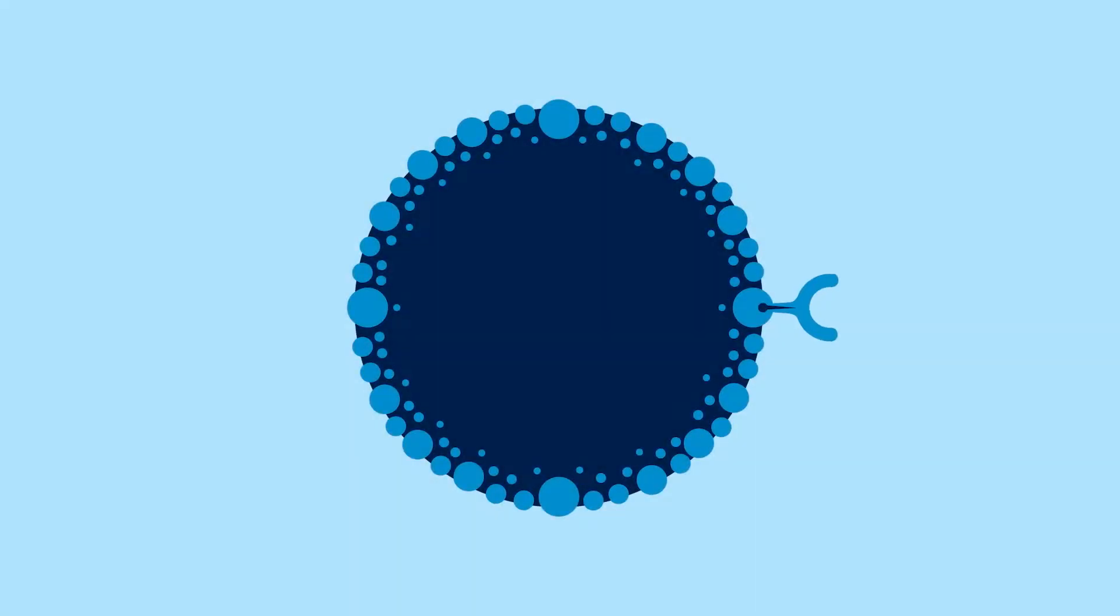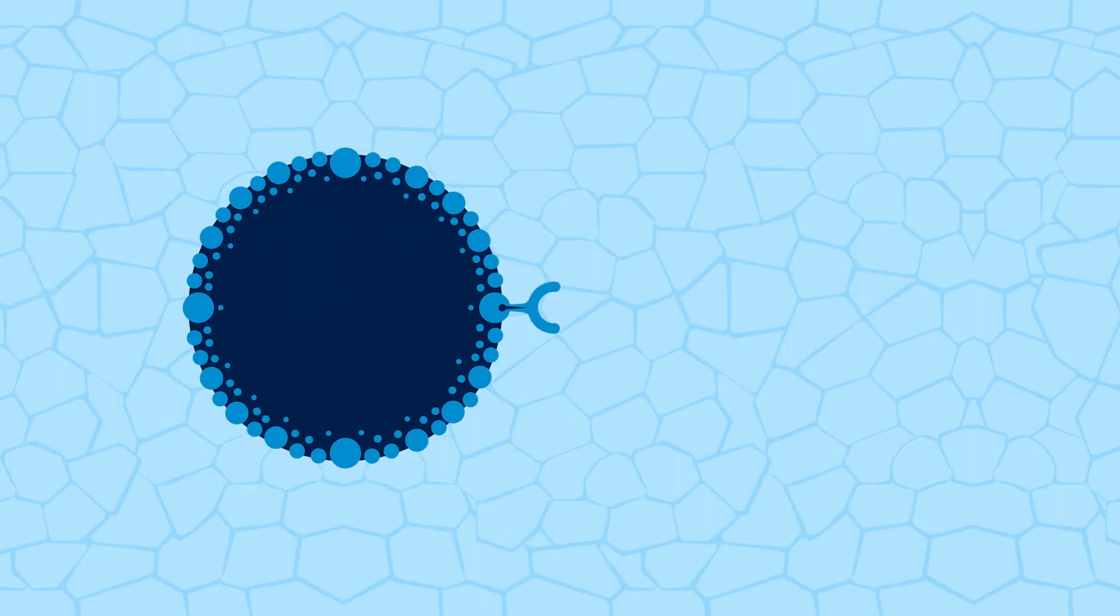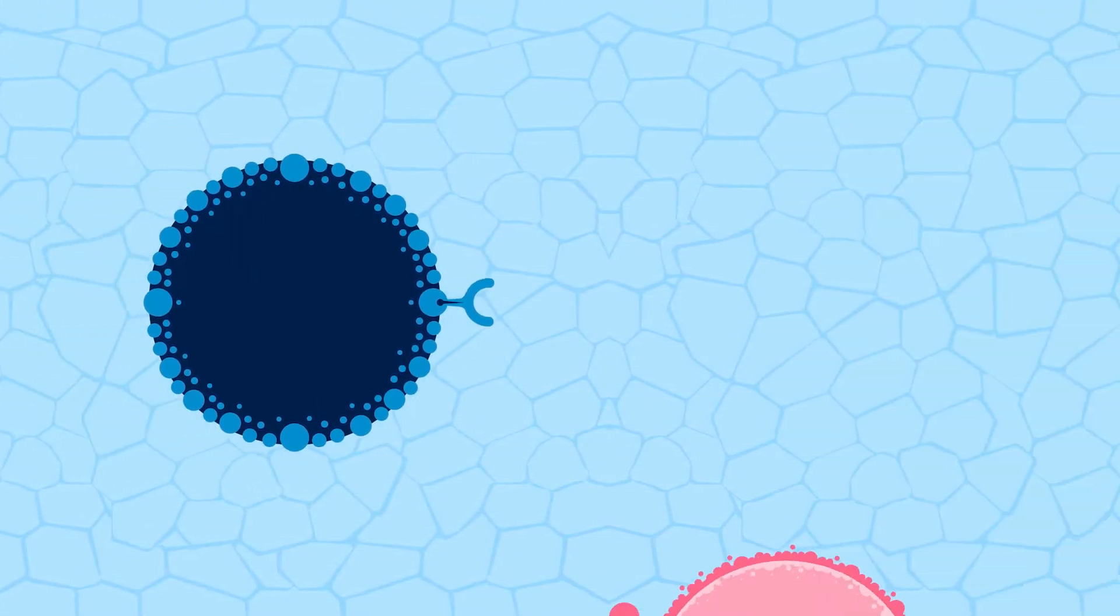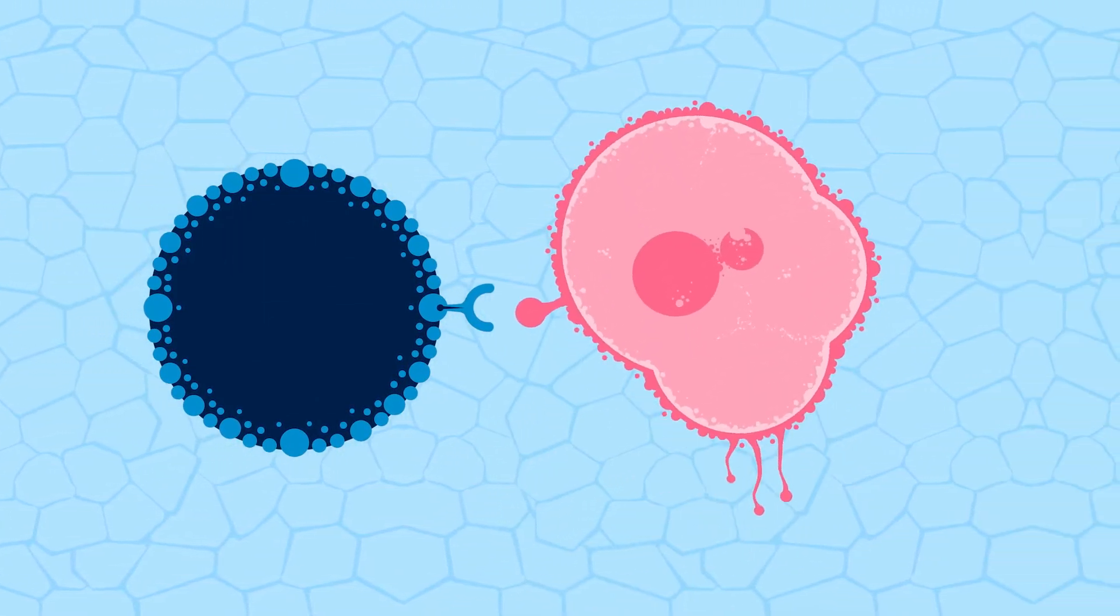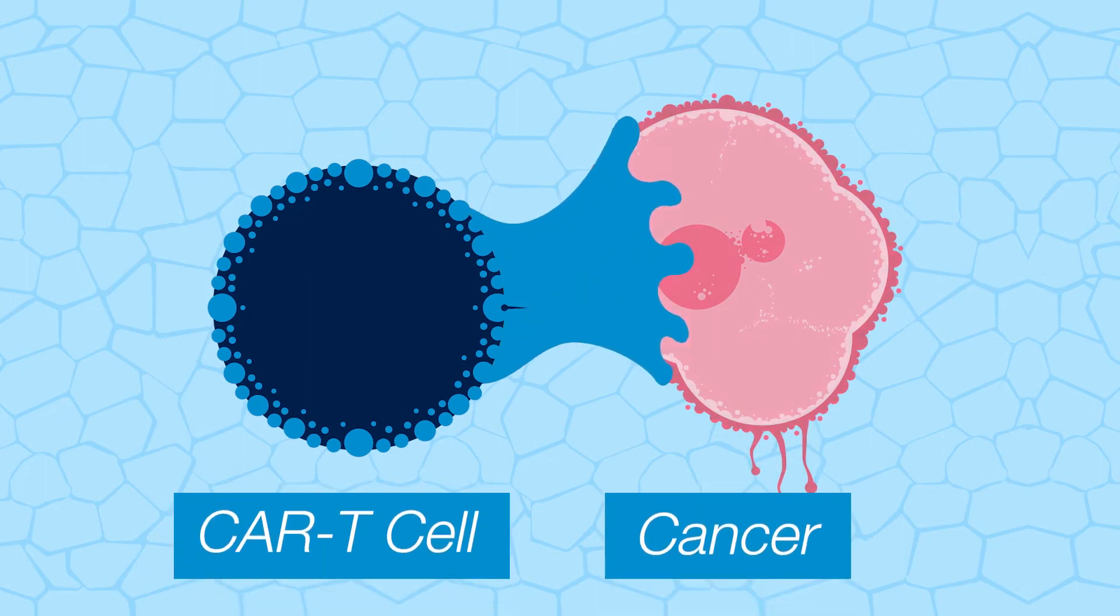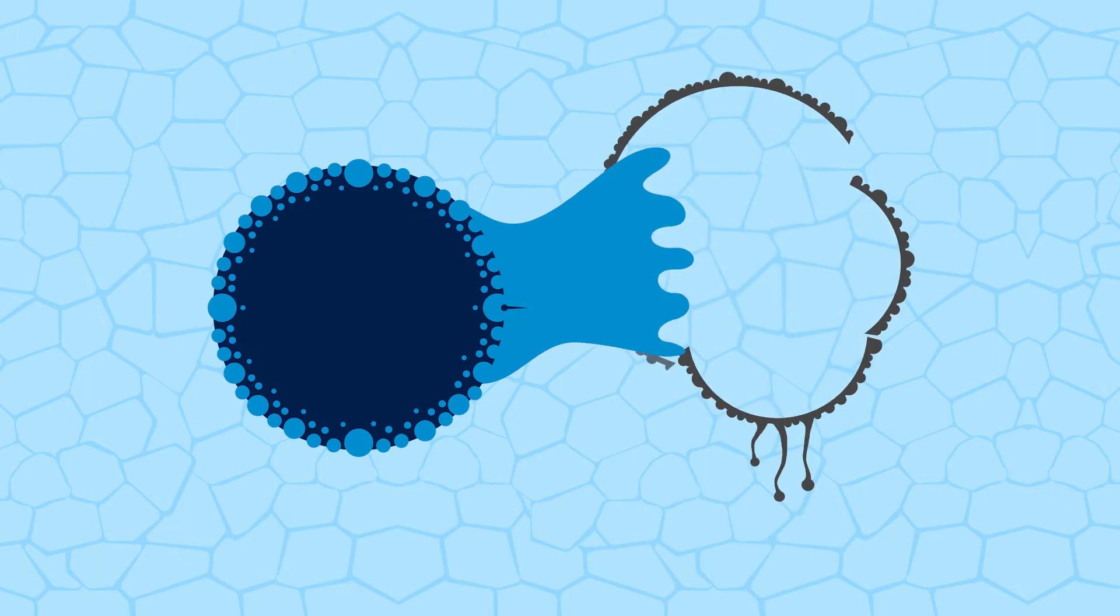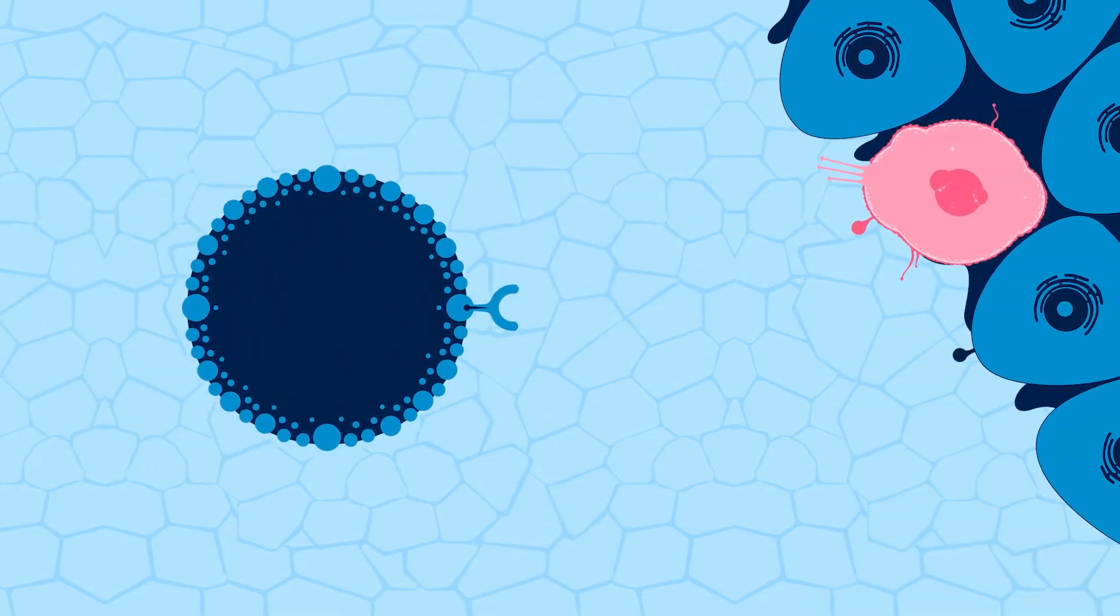T cells are important immune cells that flag pathogens and unhealthy cells in our body for destruction. Researchers can modify T cells into chimeric antigen receptor T cells, CAR T cells, to target cells with specific antigens on their surface.